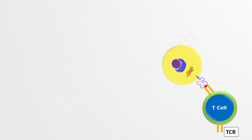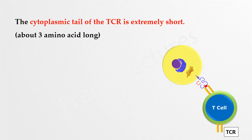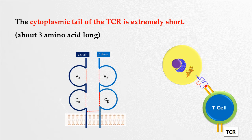After T-cell receptors recognize the antigen presented by an MHC molecule, a signal is transmitted from the surface of the T-cell to the nucleus, leading to T-cell activation. However, the T-cell receptor cannot do this alone because the cytoplasmic tail of the T-cell receptor is extremely short — only about three amino acids long.